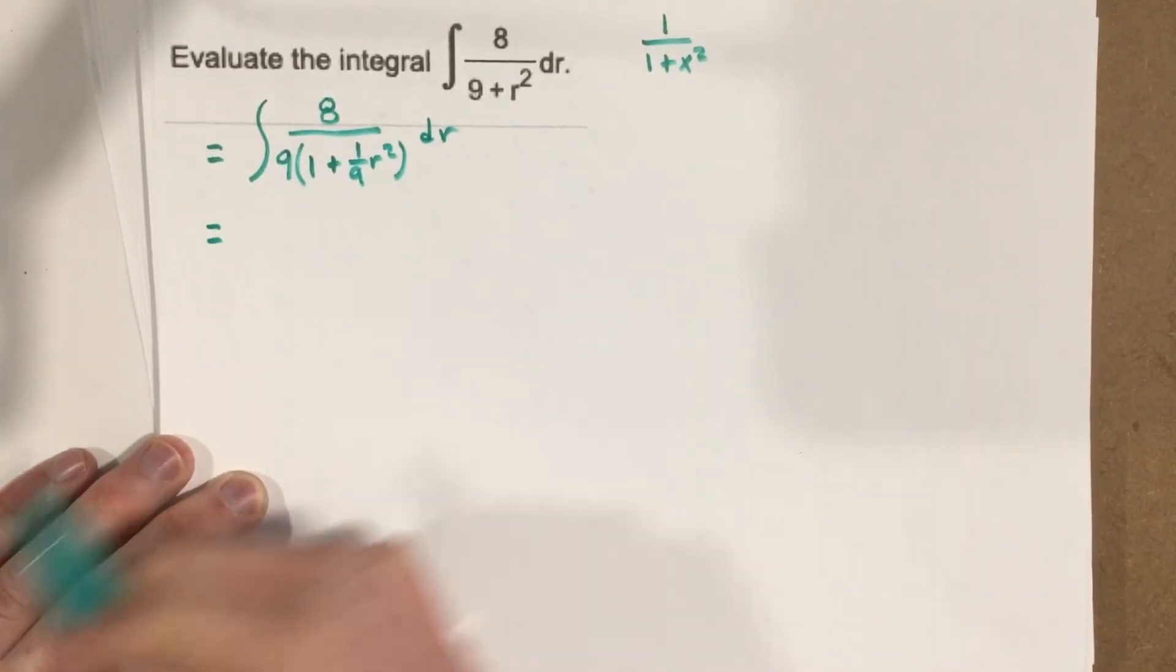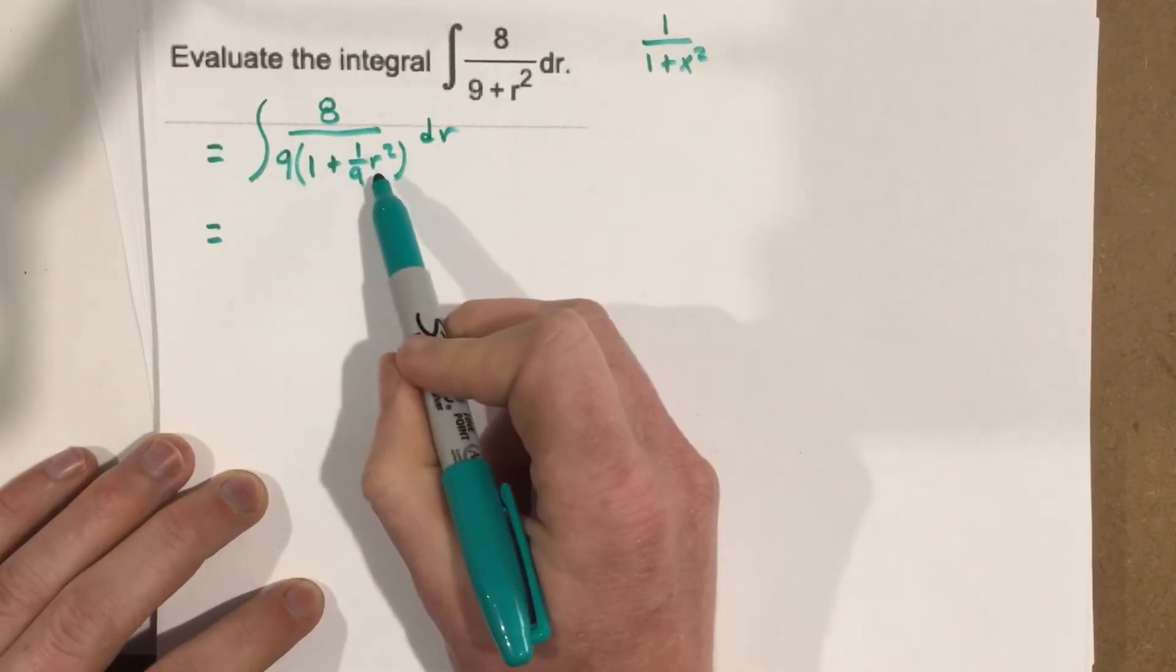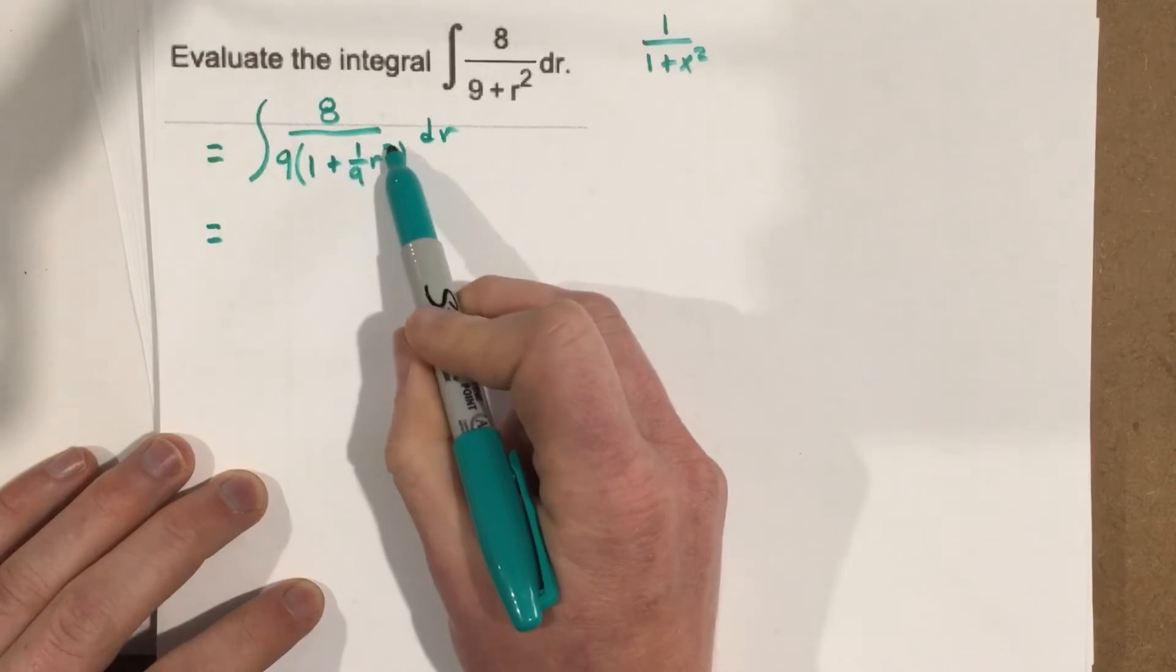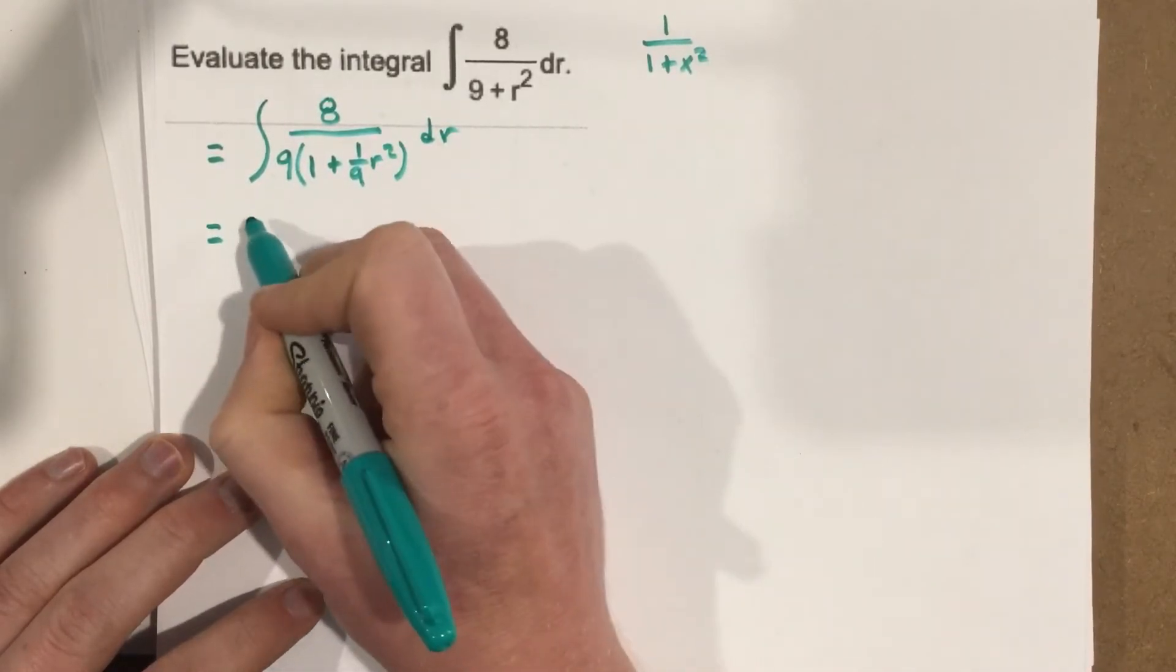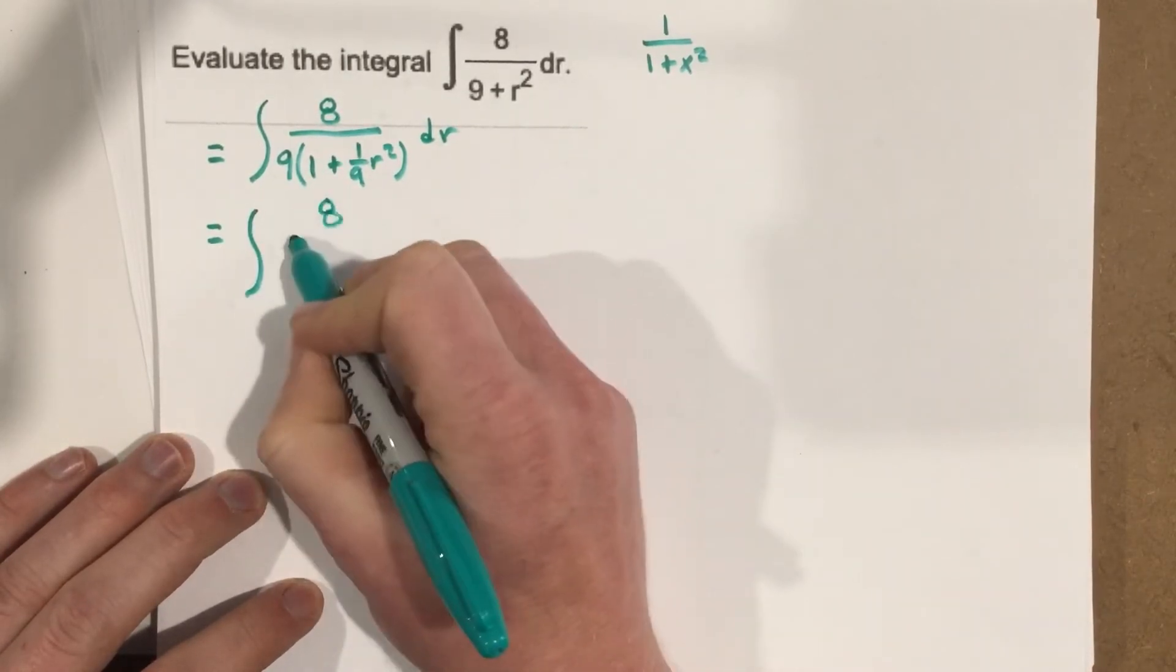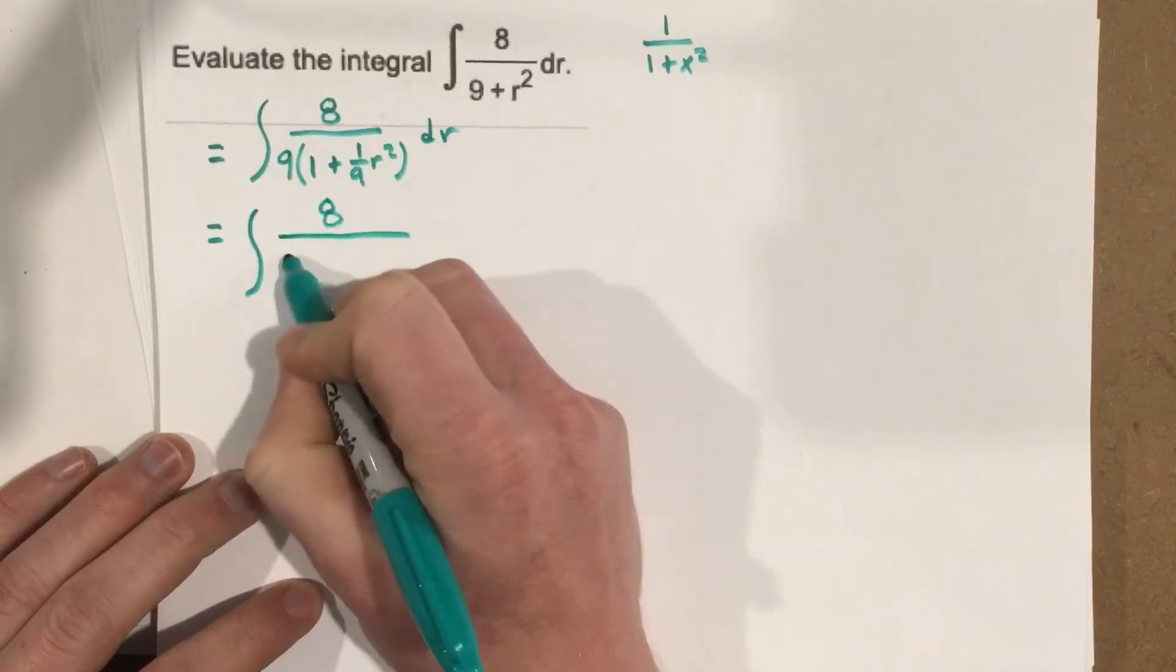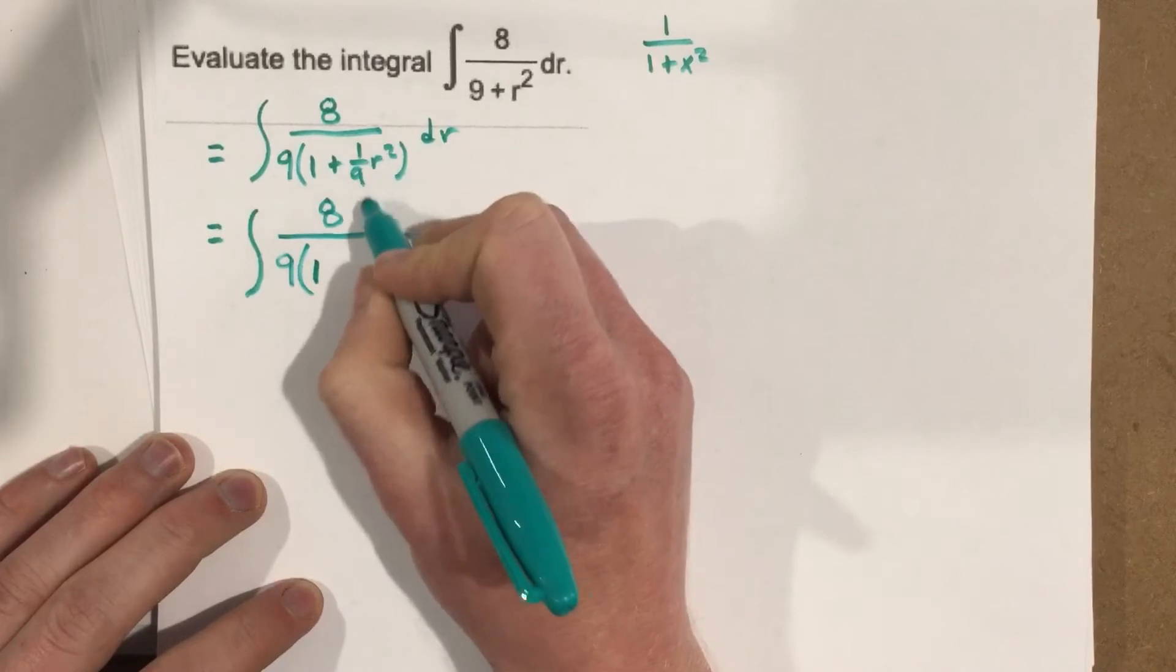And then I'm going to manipulate it even farther because I really want to do a u substitution here. But I can't do a u substitution here because the square is just on the r. It's not on the 1 9th. So I'm going to write that in a way...